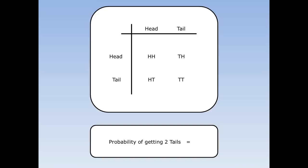What's the probability of getting two tails when I throw two coins? There's only one place where there's two tails and there are four things that could happen. So the chance of getting two tails is one out of four.